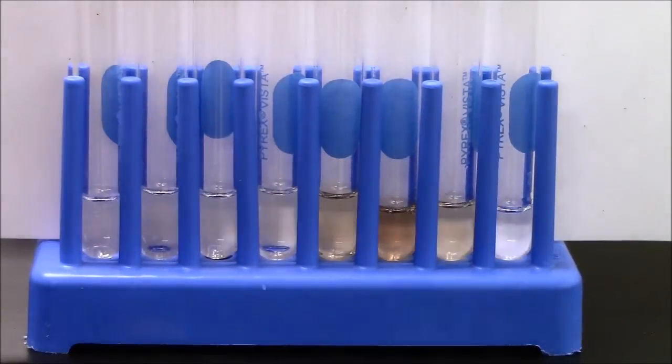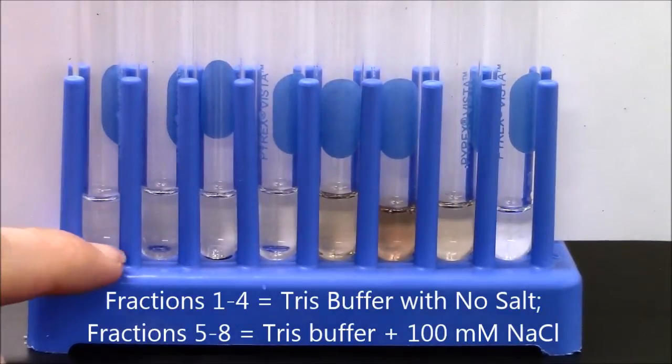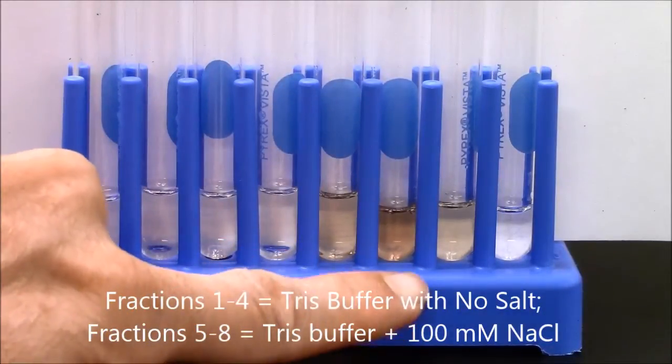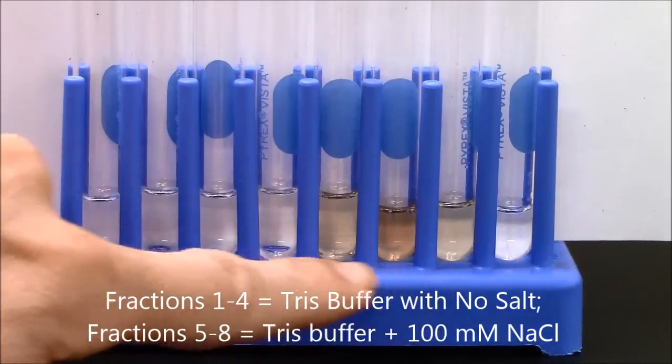Here's a visual representation of my elution profile. You can see these do not have any hemoglobin. But then these colorful fractions here have hemoglobin. This is my peak hemoglobin fraction right here.